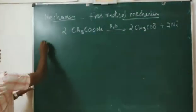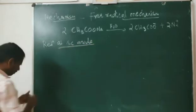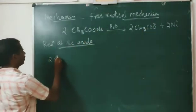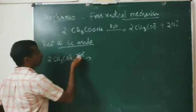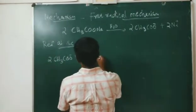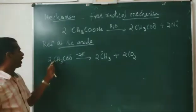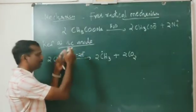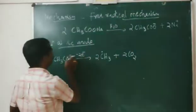Reaction at the anode: the negatively charged ions move towards the anode. Two moles of CH₃COO⁻ move towards the anode, give out two electrons, and change into two moles of CH₃ free radical plus two moles of CO₂. The carboxylate ion donates two electrons at the anode and forms the CH₃ free radical and carbon dioxide.